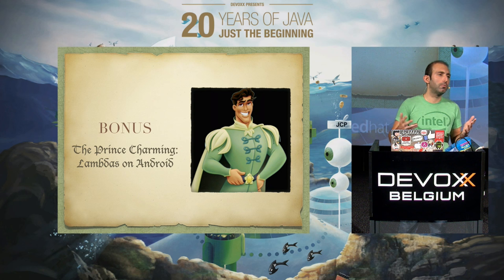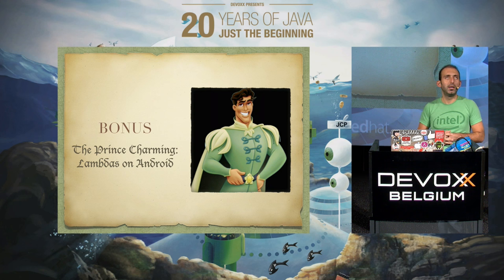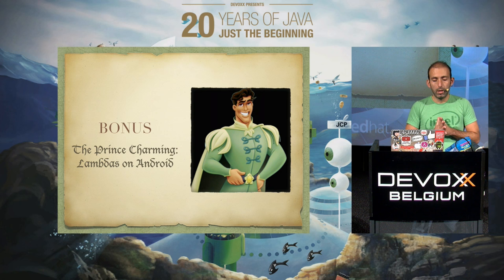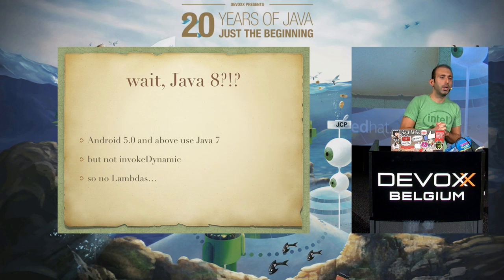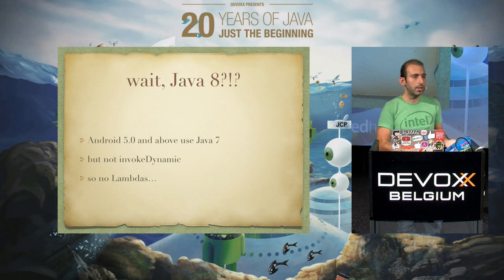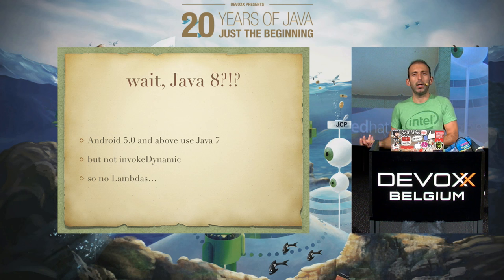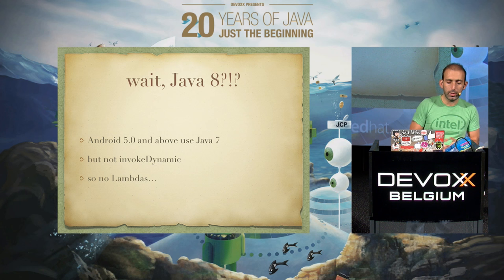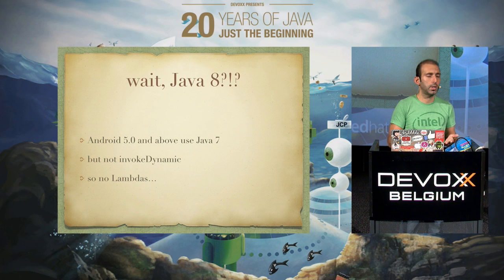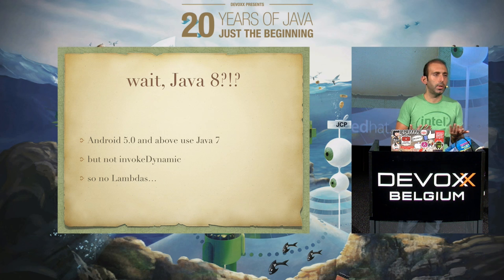We're at a Java conference, so you've been listening to Lambdas and how great Java 8 is since morning. But we don't have Java 8 on Android — technically you can install the JDK, but you'll be using it in Java 7 compatibility mode just for compiling code. And because we don't have Java 8, we can't really use Lambdas, and Android doesn't have the invokedynamic system. So installing Java 8 is kind of just for fun — you don't really make use of it.